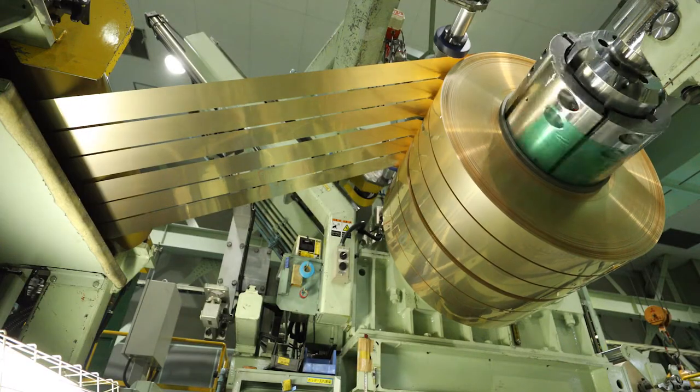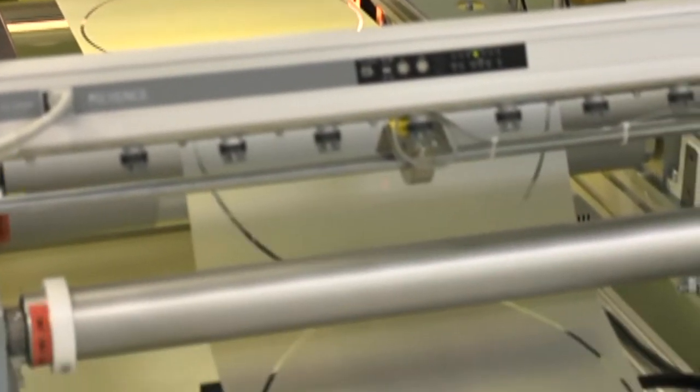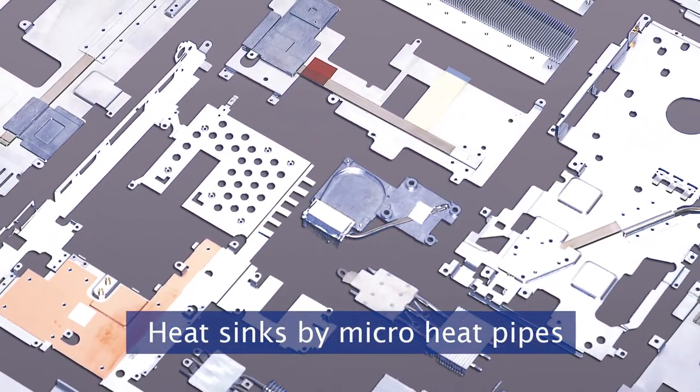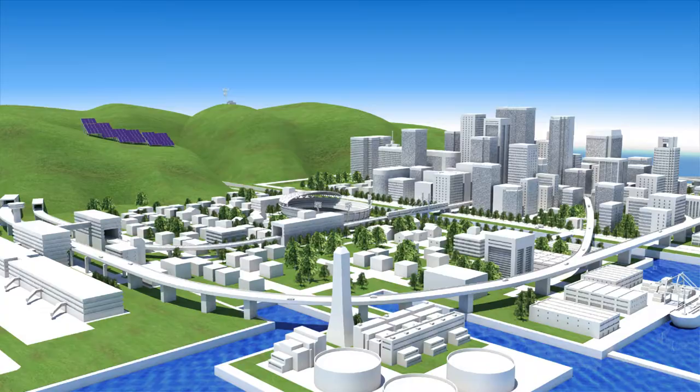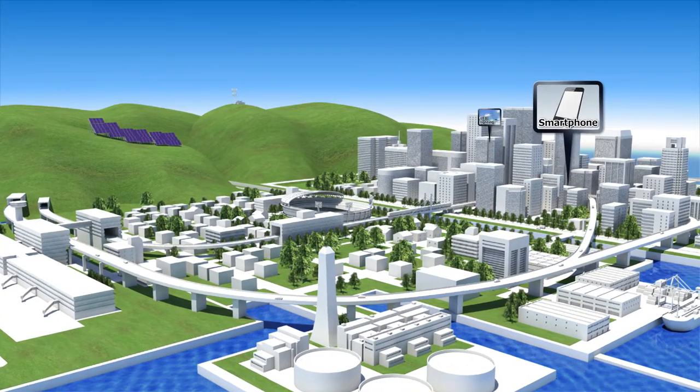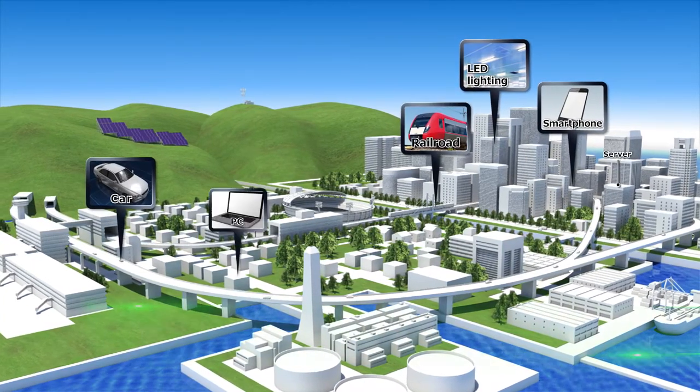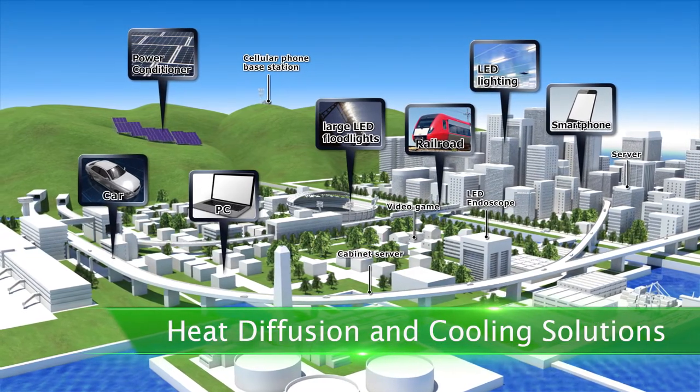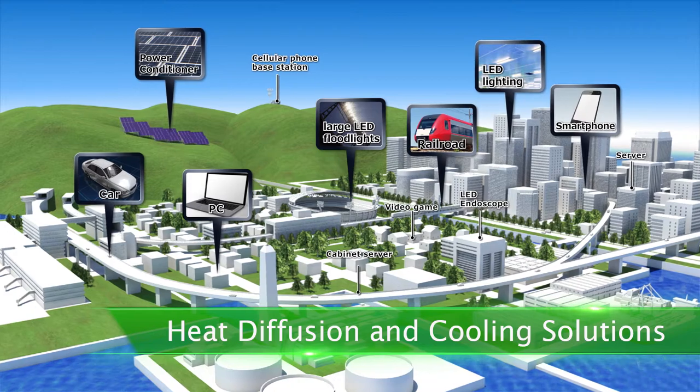Leveraging an array of technologies, from materials to production, Furukawa Electric contributes to the advancement and miniaturization of electronics. Heat dissipation and cooling are essential for today's increasingly sophisticated electronic products. Our technology is put to use in numerous everyday scenes, from smartphones and office LED lighting to vehicles and railways.